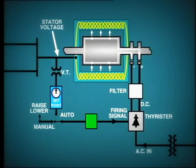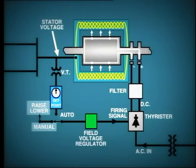The firing circuit is controlled by the field voltage regulator. This regulator has two inputs, manual and auto. The manual control disconnects the automatic function and allows the operator to directly control excitation.